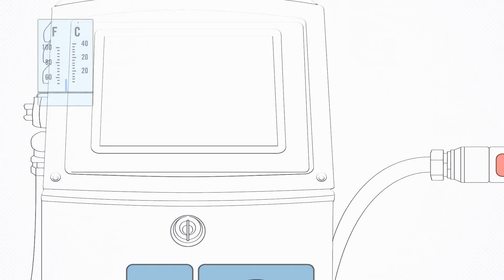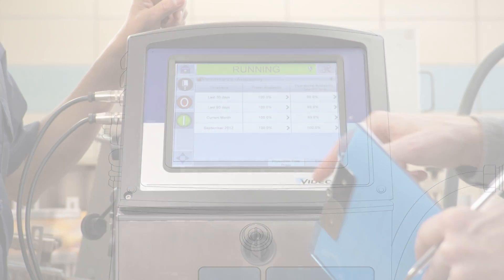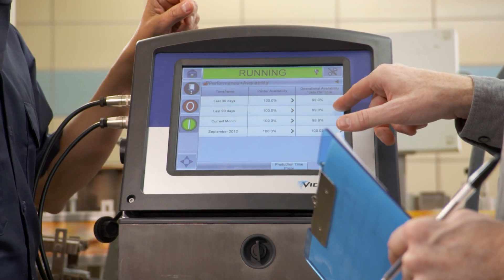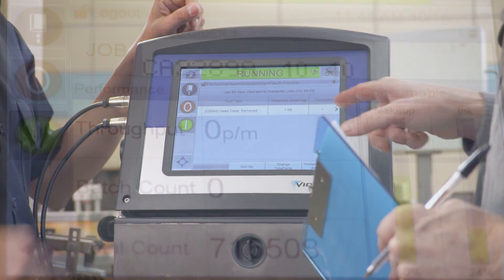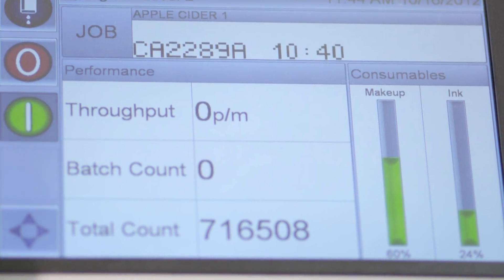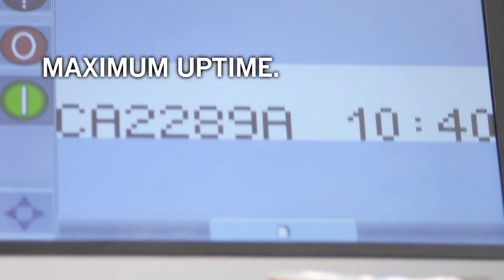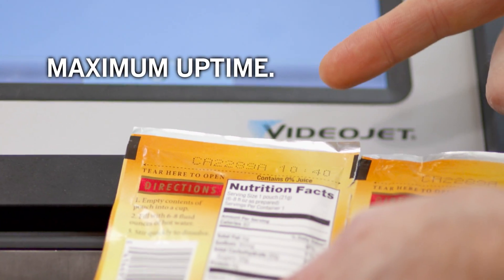To sum it up, dynamic calibration means the printer makes printhead temperature control, automatic drop control, and time of flight velocity control work together to ensure maximum uptime and great print quality, only from VideoJet.